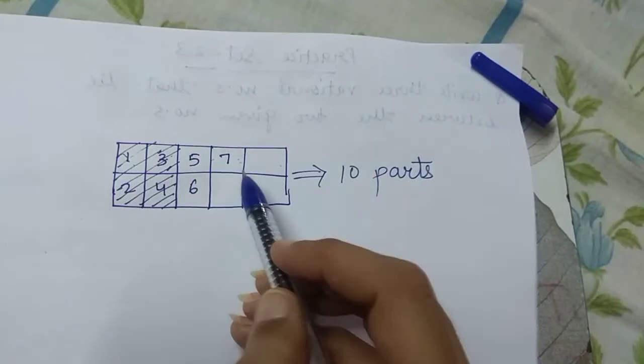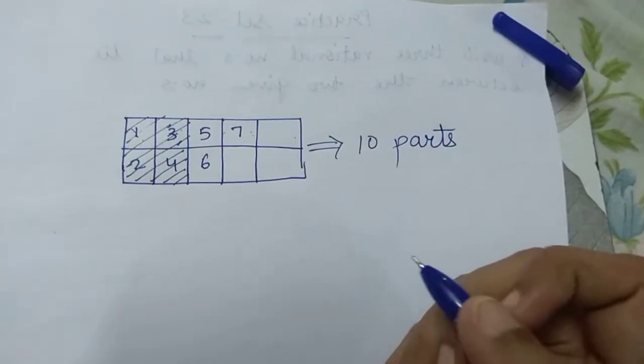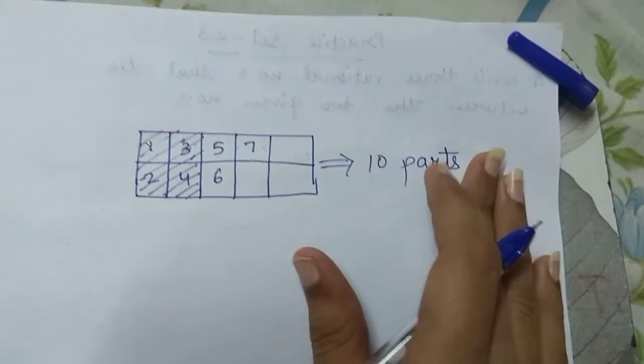So how much more need to be painted? 1, 2, 3. 3 by 10 parts need to be painted more. So this was a diagrammatical representation.